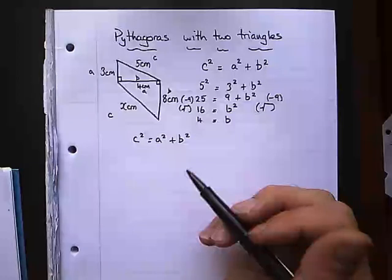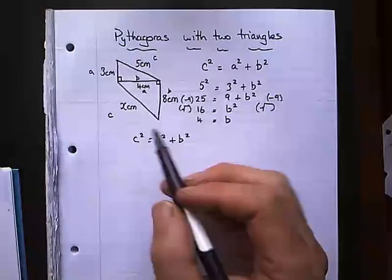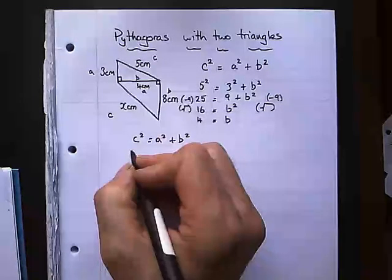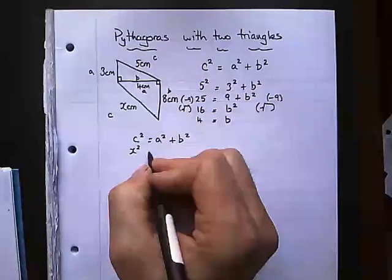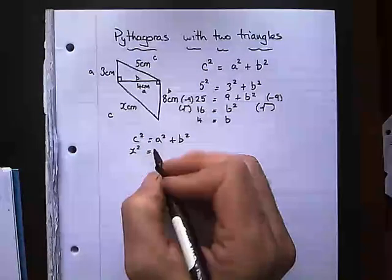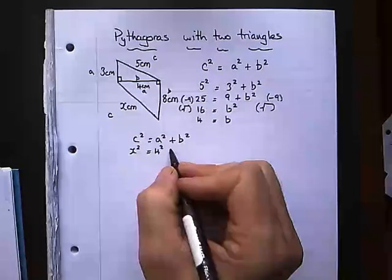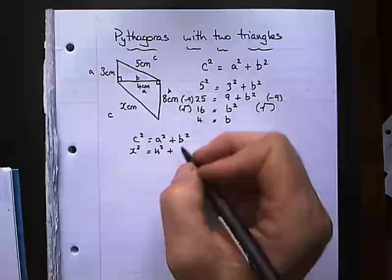And then you can check to see whether you get the same answer. So my C value is now X. So that's what I'm looking for. So X squared. My A value is 4. So that's 4 squared. And my B value is 8. So that's 8 squared.